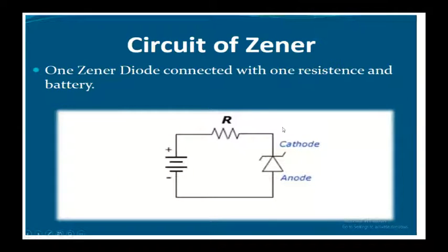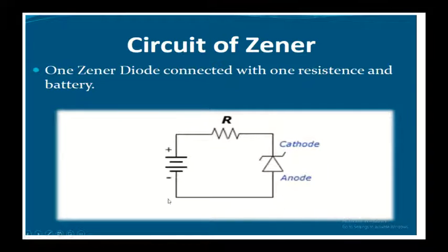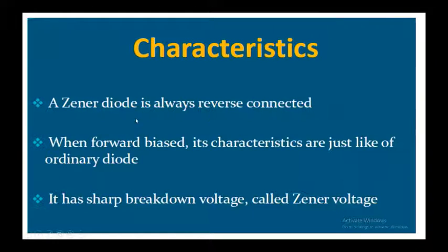This is the simple circuit for a Zener diode. You can see this is the Zener diode where this part is the cathode and this is the anode. The cathode is connected to the positive of the battery through a resistor R, and the anode is connected to the negative of the battery. So you can see that the Zener diode is reverse biased. The Zener diode is always reverse connected inside a voltage regulator because it works in the reverse biased condition.